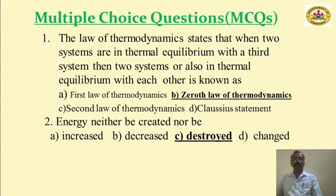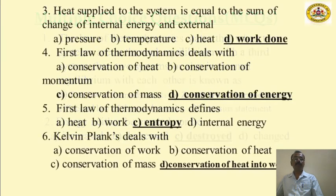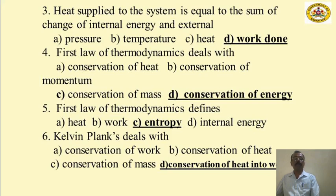MCQ: Energy is neither created nor destroyed — option C is the correct answer; options A, B, and D are wrong. Next, heat supplied to the system equals the sum of change in internal energy and external work done — option D is correct; options A, B (temperature), and C (heat) are wrong answers.